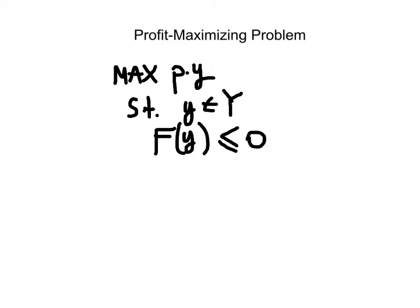By definition, the transformation function is a convenient way of representing the production set. Here, just a quick note: when you look at this expression, both P and Y are vectors of the same dimension, which is L, the number of commodities in the space.